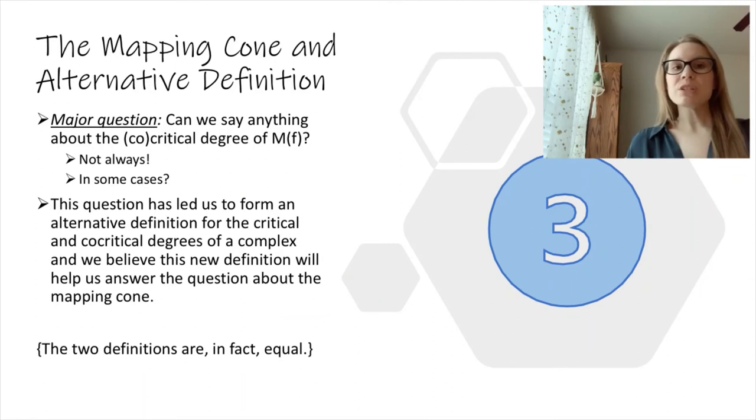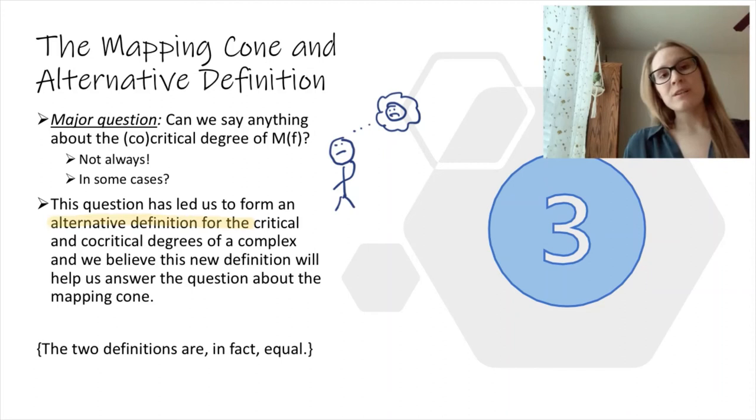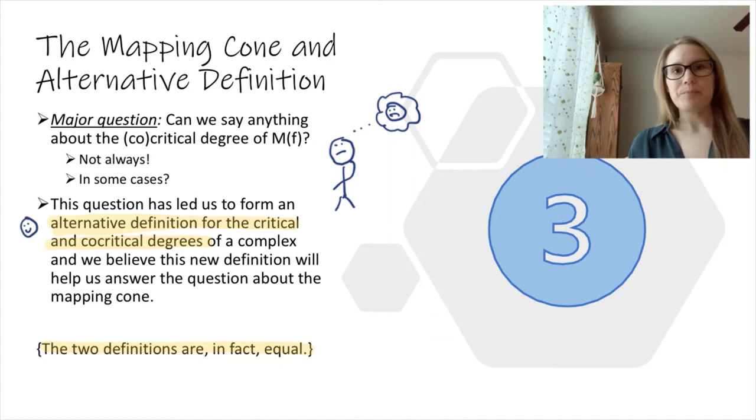The most intriguing operation has been the mapping cone, but can we actually say anything about the critical and co-critical degrees of a mapping cone? The truth is not always, but our hope is that we will be able to say something in certain cases. This has actually led us to form an alternative definition for the critical and co-critical degrees in KTAC, and we believe this new definition will help, and we have verified that our two definitions are in fact equivalent.